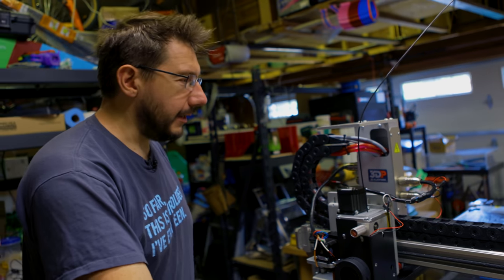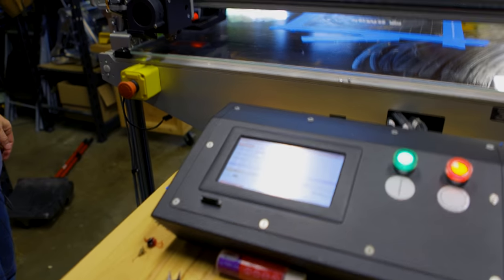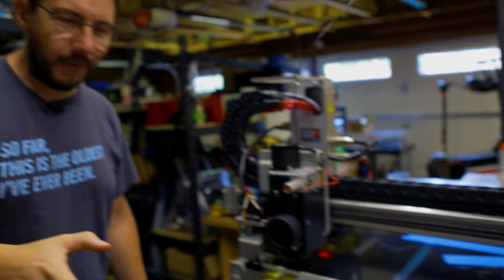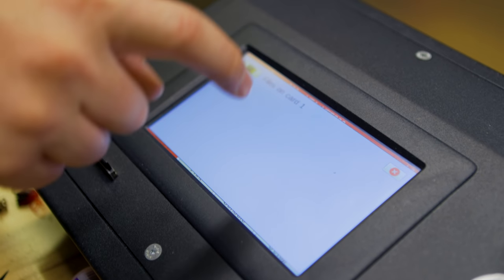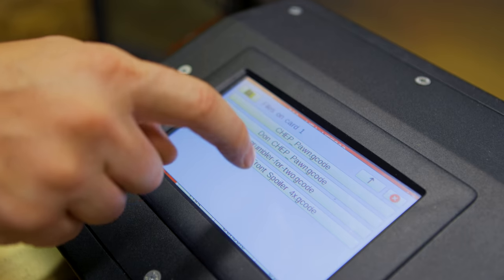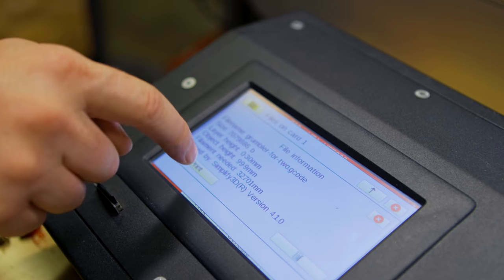So right now I'm purging the red PETG that was in there and out should flow some black PETG from Polymaker in just a moment. There it is. When this is extruding, this is a one millimeter nozzle and extruding the filament really fast. And so it's going to maintain its heat for longer, which means that's still going to be pliable and hot and hurt you if you touch it.